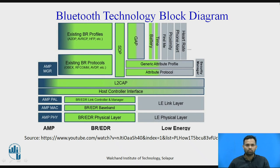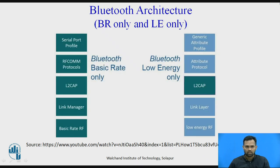Although it looks complicated, the Bluetooth Technology block diagram is quite simple. Next, we look at the architecture for BR-only and LE-only variants. For the classical variant, the architecture includes: Serial Port Profile, RFCOMM Protocol, L2CAP (Logical Link Control and Adaptation), Link Manager, and Basic Rate RF. For Bluetooth Low Energy, the architecture consists of Generic Attribute Profile, Attribute Protocol, L2CAP, Link Layer, and Low Energy RF.